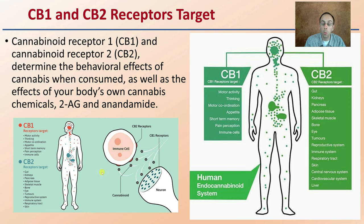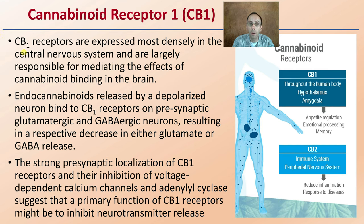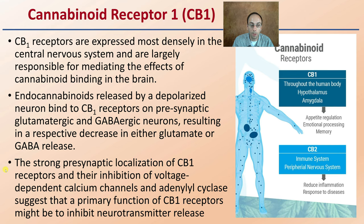Looking at the CB1 receptor in more detail — they are expressed most densely in the central nervous system and are largely responsible for mediating the effects of cannabinoid binding within the brain. Endocannabinoids released by depolarizing neurons bind with CB1 receptors on presynaptic glutamatergic and GABA neurons, resulting in a respective decrease in either glutamate or GABA release. GABA is one of those molecules involved with chemical signal transduction.